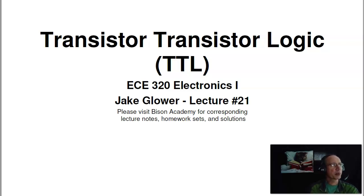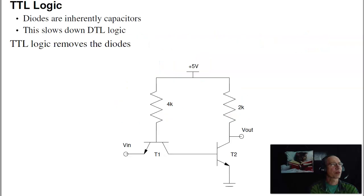Welcome to lecture number 21 for ECE 320, Electronics 1, TTL logic, or transistor-transistor logic. In the previous lecture, we covered DTL logic. That's using max functions and min functions with diodes, coupled with a transistor to clean up the logic levels. That works, but it has slow logic because of the diodes. To speed up the logic, I need to get rid of the diodes. And that's where TTL logic comes into play.